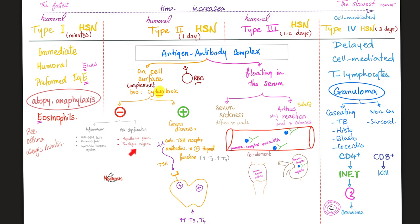Inflammation is seen in anti-glomerular basement membrane antibody disease, also known as Goodpasture syndrome, rheumatic fever, and hyperacute transplant rejection. Cell dysfunction is seen in myasthenia gravis and pemphigus vulgaris. Antibodies stimulate the target in one case only — Graves' disease — where antibodies against the TSH receptor mimic TSH, stimulating the thyroid gland to secrete excess thyroid hormone. So Graves' disease is a type 2 hypersensitivity reaction.